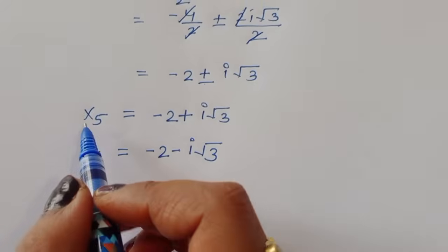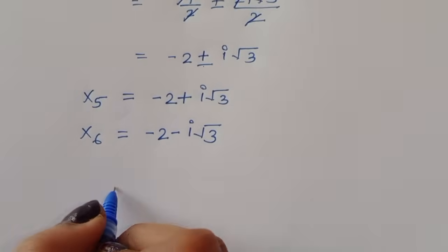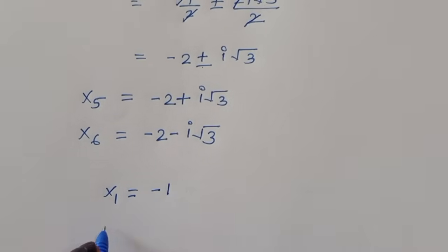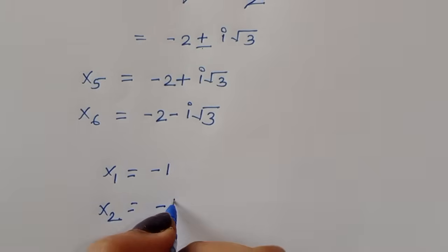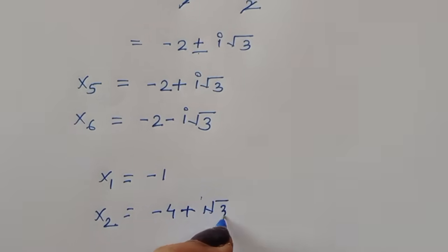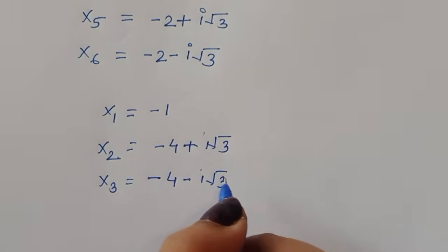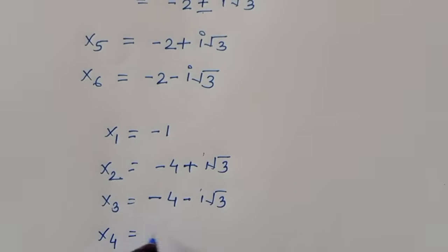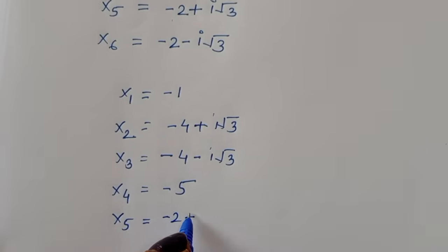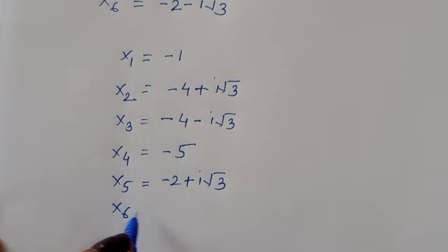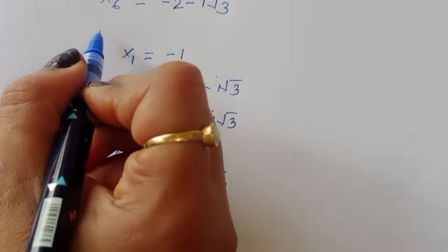In this way we got all six values of x: x₁ = −1, x₂ = −4 + i√3, x₃ = −4 − i√3, x₄ = −5, x₅ = −2 + i√3, and x₆ = −2 − i√3. This is the complete solution.